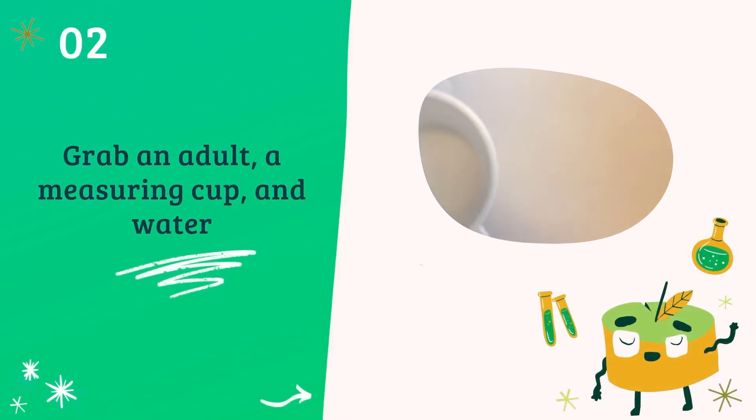Next, you'll need to get an adult, a measuring cup, and water. Measure one-third cup of water and have an adult heat the water in a pot on the stove or in a microwavable container in the microwave. The water doesn't need to boil, it just needs to be hot. Remember to be cautious around hot water and to have the adult handle it.